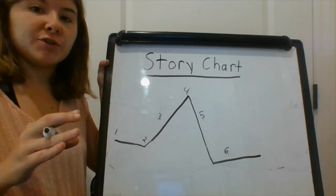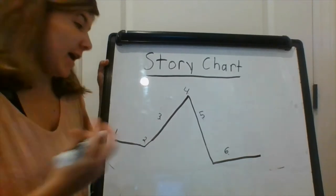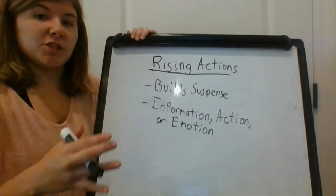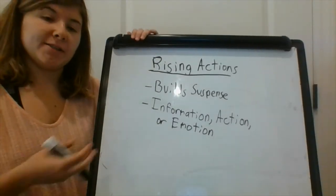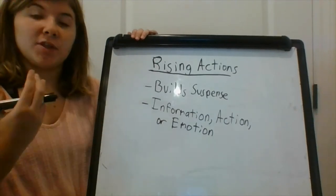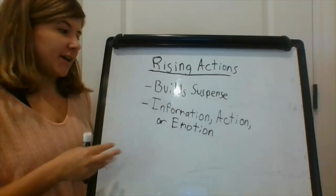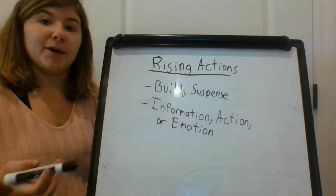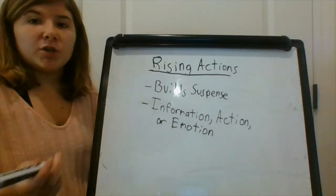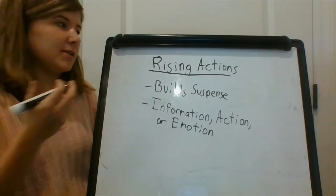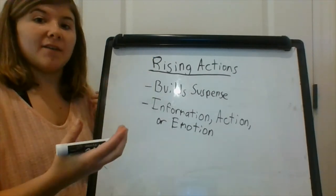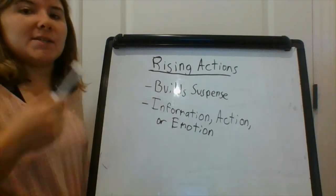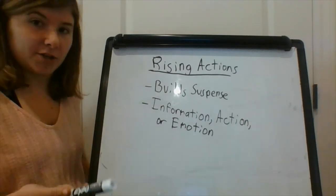The third part of your story is your rising actions. Your rising actions are your events which lead up to your climax. These are the events which build suspense within your story, and your rising actions should do one of three things: they should either provide your character with information they might not already know; action, which means these rising action scenes should have action or fighting in them; or finally they can be emotional, because these help your readers build attachment to your characters.